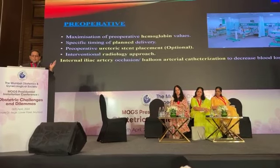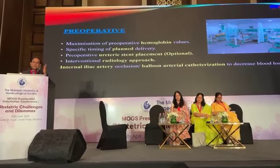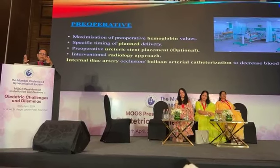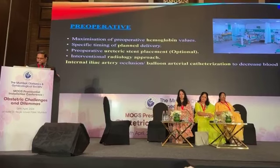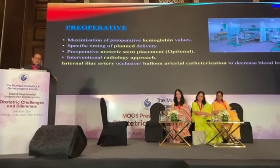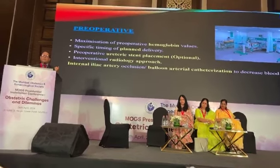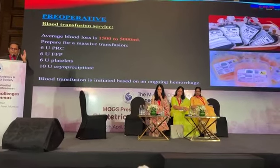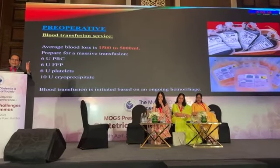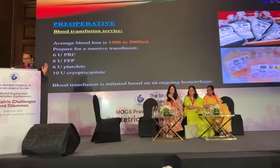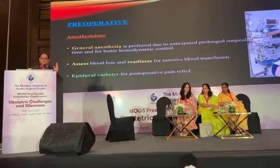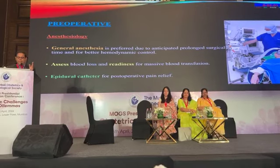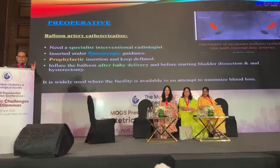Preoperatively, all assessments have to be done — haemoglobin, planned delivery. Ureteric stenting is optional if you are thinking there is a possibility of ureteric involvement in case you have to do a complete resection. The average blood loss is 1500 to 5000 ml, so you need to have preparation of red cells, FFP, cryoprecipitate, and platelets all ready for such cases. The anaesthetist has to be a senior person who has dealt with such cases. Epidural catheter would be a better option and readiness for massive blood transfusion has to be in place.